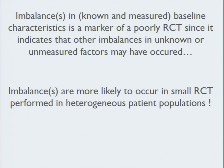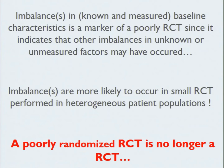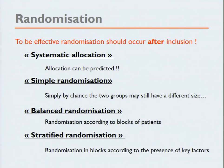A poorly randomized controlled trial is no longer really a randomized controlled trial, even if we keep calling it that. For randomization to be effective, it should occur after inclusion — otherwise you could induce a selection bias. There is simple randomization, and also stratified randomization, where you stratify within subgroups when you want to be sure to conduct a valid subgroup analysis — where you know from previous studies that you must absolutely keep those subgroups similar between treatment arms.